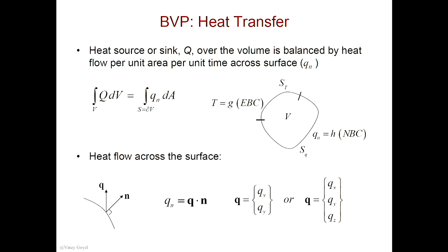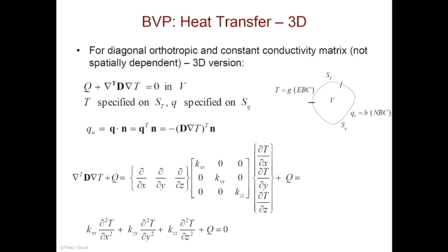We found an expression for 2D or 3D — we can do it either way, depending upon the problem. For a diagonal orthotropic and a constant conductivity matrix, not spatially dependent, basically the conductivity is constant across the structure of interest. In the 3D version, the energy balance led us to the partial differential equations for a heat transfer problem — T specified on part of the boundary, and Q, the heat flux, specified on part of the boundary.